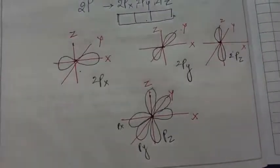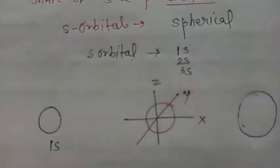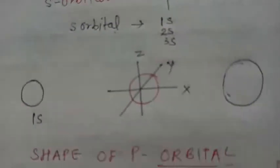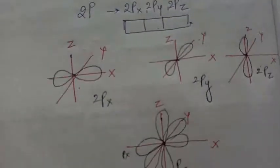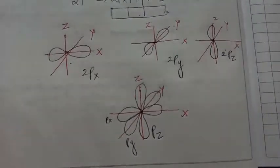So this was all about the shape of s orbital—s orbital is spherical in shape and p orbital is dumbbell shaped. So I hope this is clear. Thank you for watching.